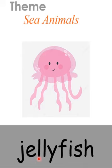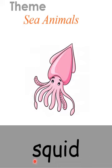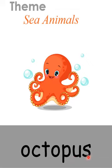J-E-L-L-Y-F-I-S-H. Jellyfish. And this is a squid. How to spell squid? S-Q-U-I-D. Squid. I repeat again. S-Q-U-I-D. Squid. And this is an octopus. O-C-T-O-P-U-S. Octopus. I repeat again. O-C-T-O-P-U-S. Octopus.